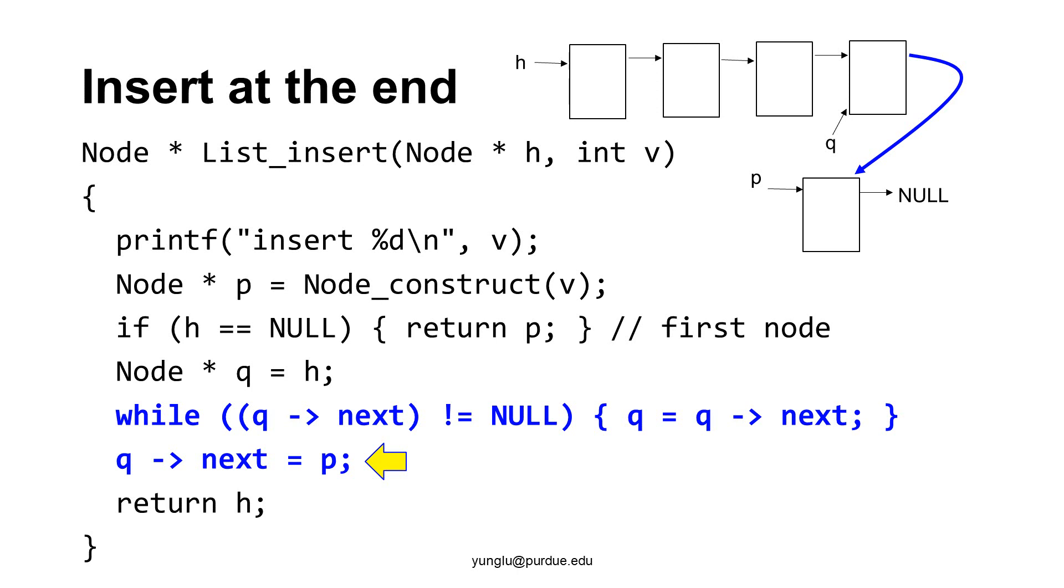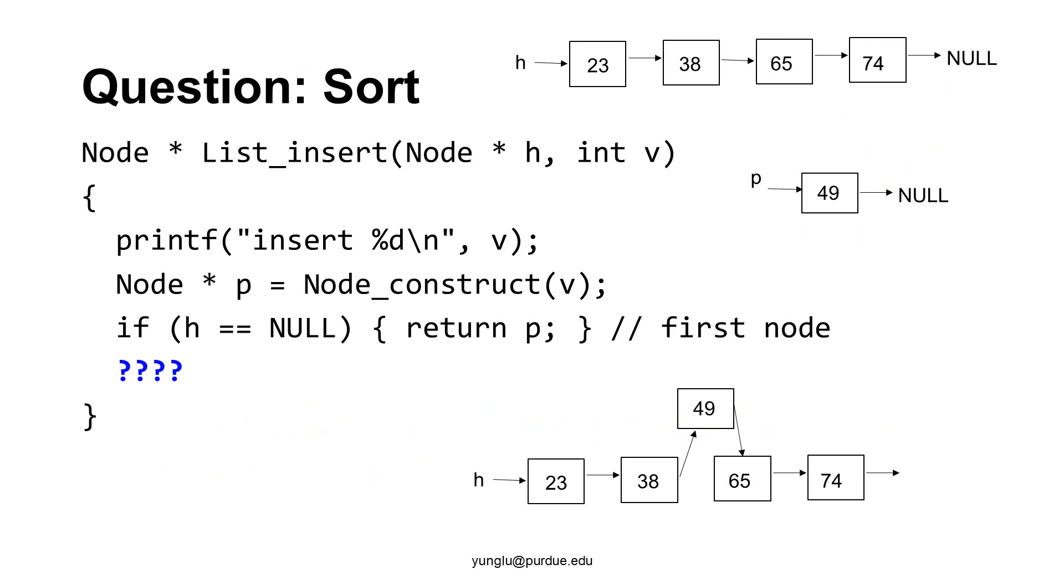The next slide is a question for you. How can you write the insert function so that the numbers are sorted in ascending order? Suppose the linked list currently stores numbers 23, 38, 65, and 74. The newly added node has value 49. How can you find the node that should be before 49 and insert 49 here?